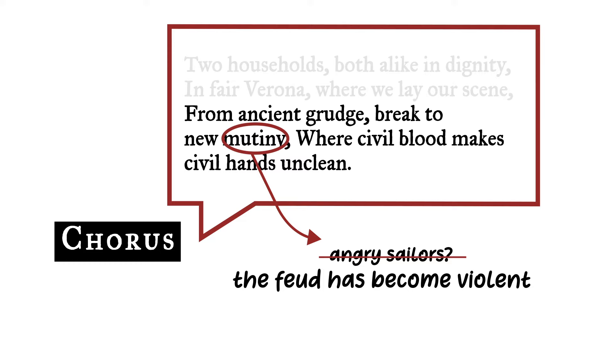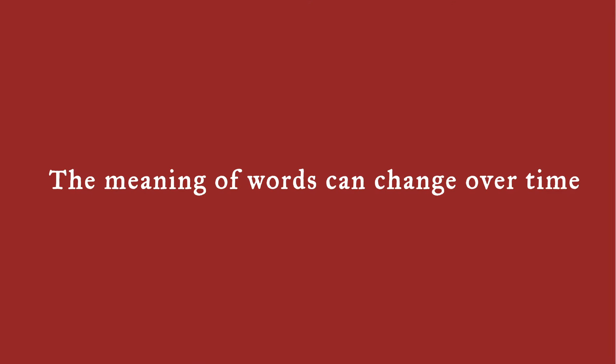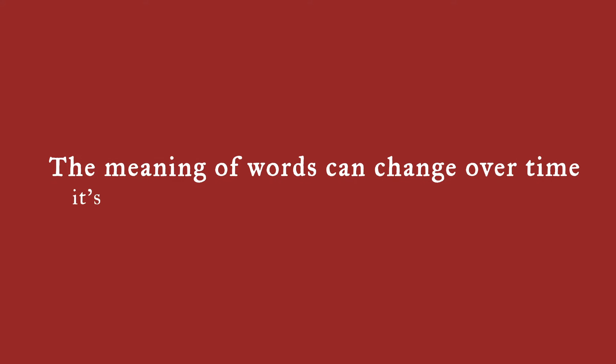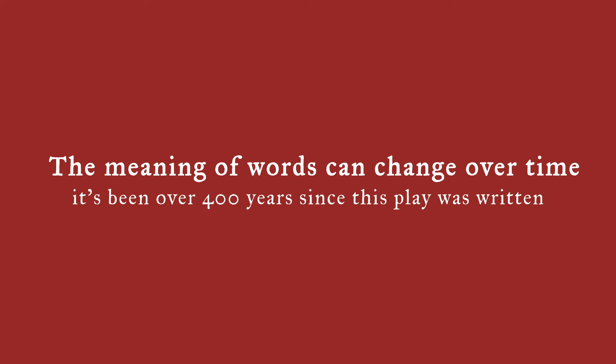But how can we account for these different meanings? One reason that we're sometimes unfamiliar with how Shakespeare uses words we think we know is that the English language has evolved tremendously over the past 400 years. We simply speak differently now. We use many words quite differently than Shakespeare did, and we've stopped using other words that were common in Shakespeare's day.